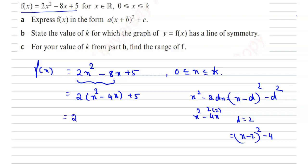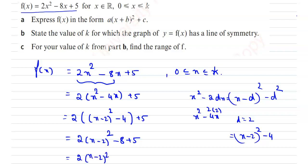Substituting back: 2 times [(x minus 2) whole squared minus 4] plus 5, which equals 2 times (x minus 2) whole squared minus 8 plus 5, which equals 2(x minus 2) whole squared minus 3. So f(x) equals 2(x minus 2) whole squared minus 3.